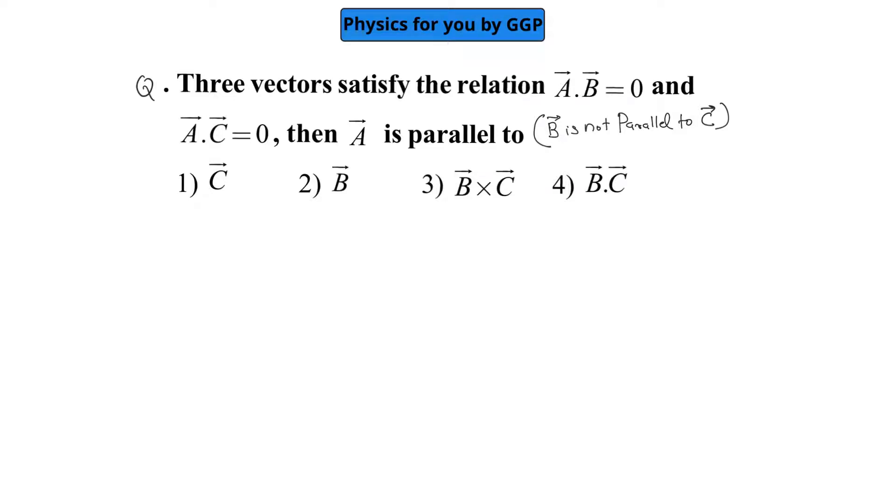Over here it is given that three vectors satisfy the relation a dot b is equal to 0 and a dot c is equal to 0, then a is parallel to... over here just remember that b is not parallel to c.